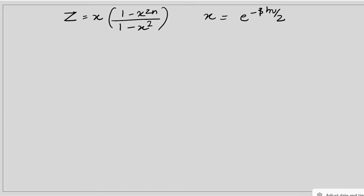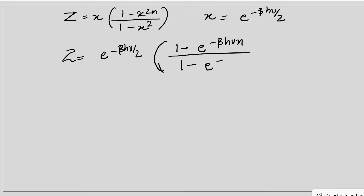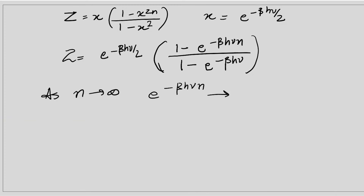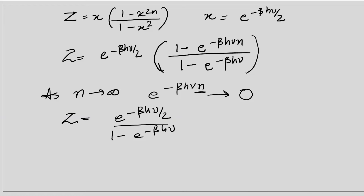Putting the value of x back, we get Z equal to e^(negative beta h-nu / 2) over 1 minus e^(negative beta h-nu). As n tends to infinity, the term e^(negative beta h-nu times n) tends to 0 because it is a negative power of the exponent, so Z reduces to e^(negative beta h-nu / 2) over 1 minus e^(negative beta h-nu).